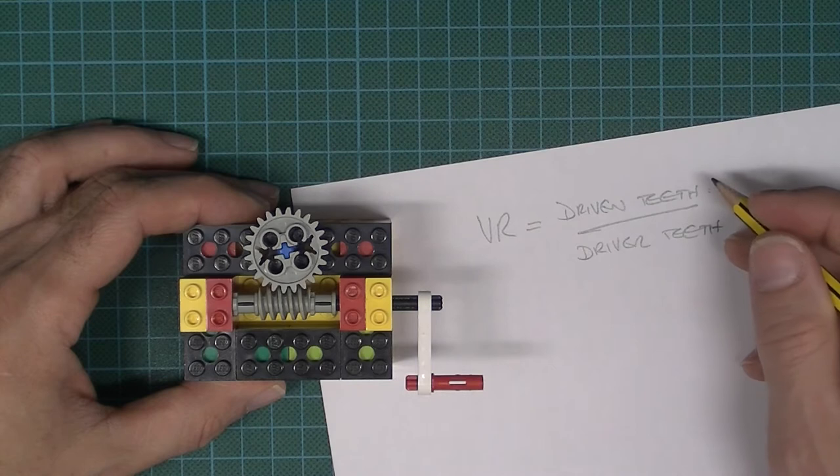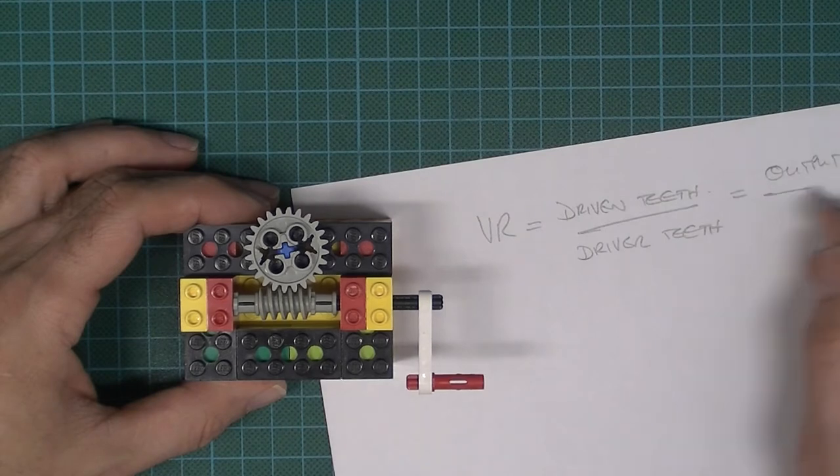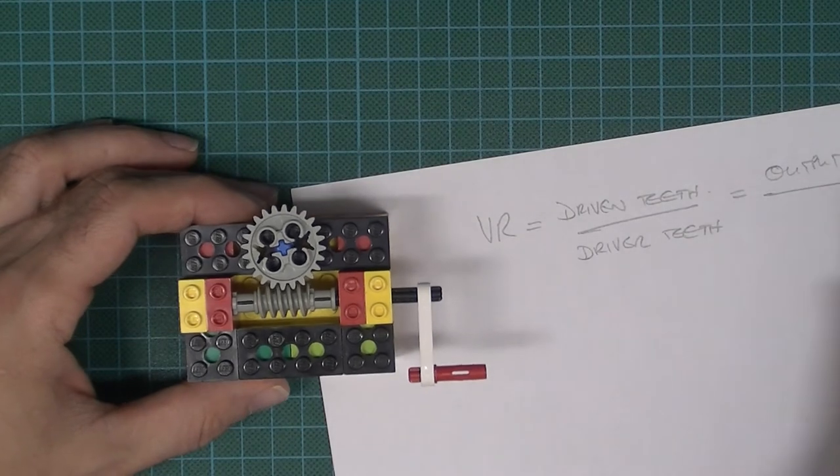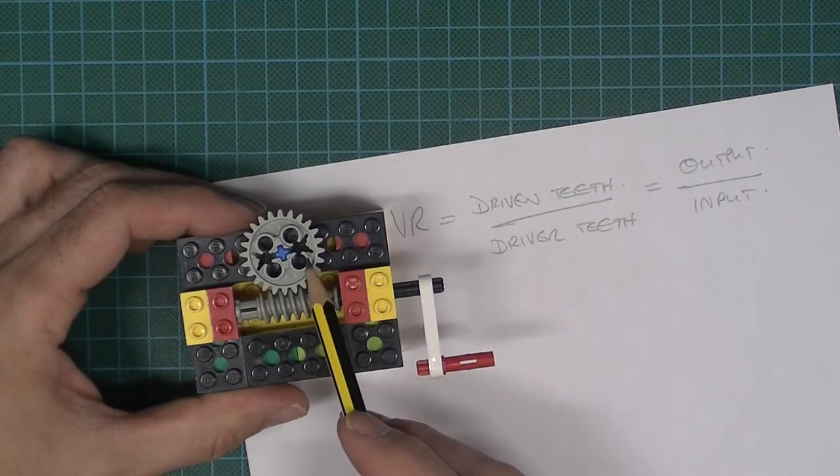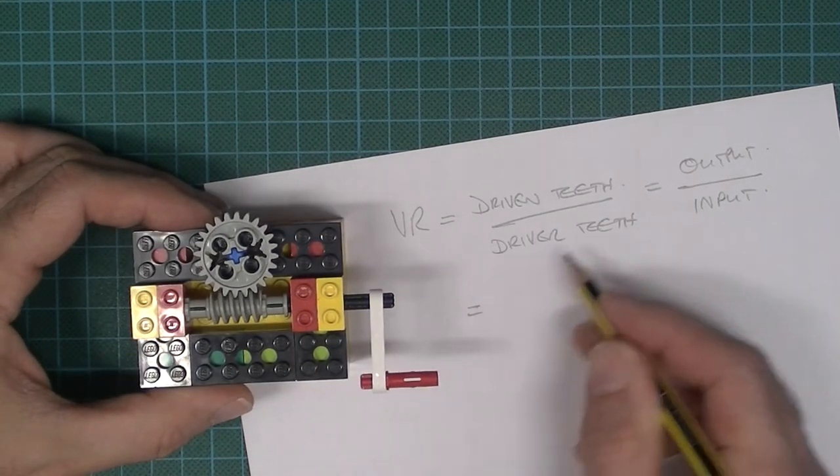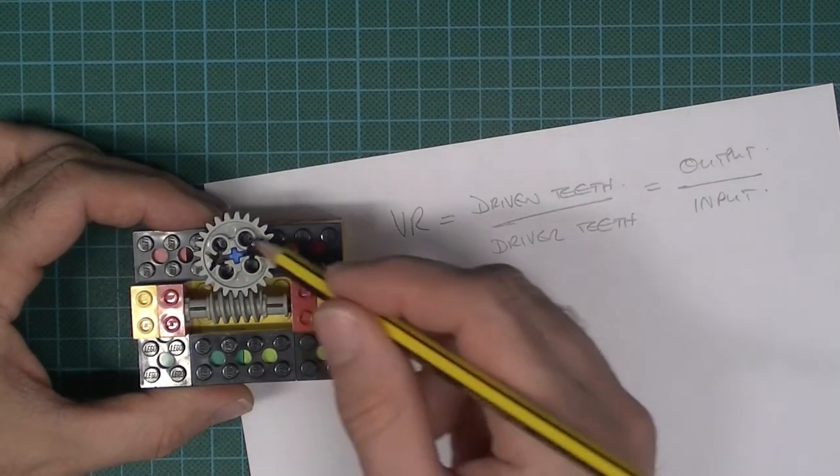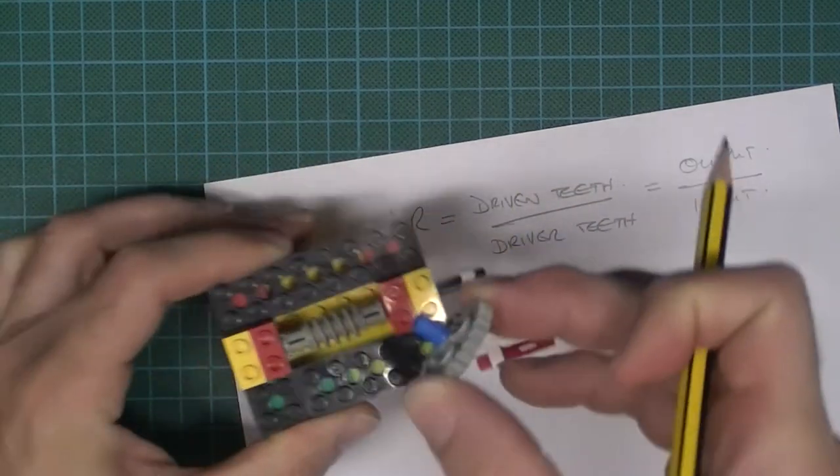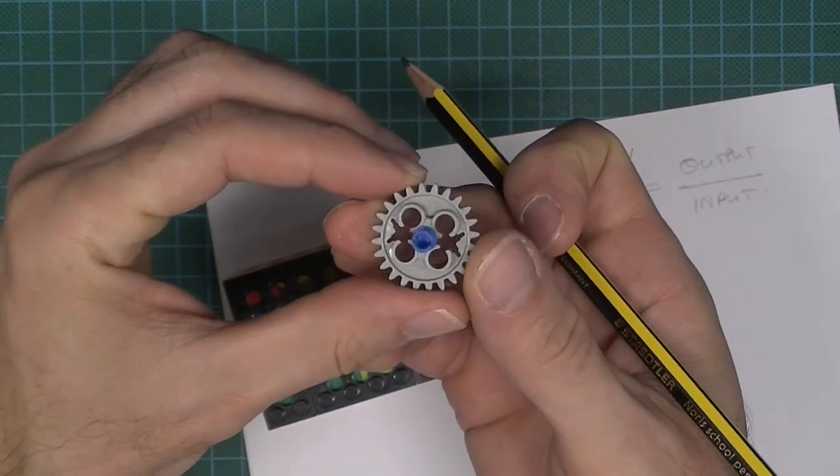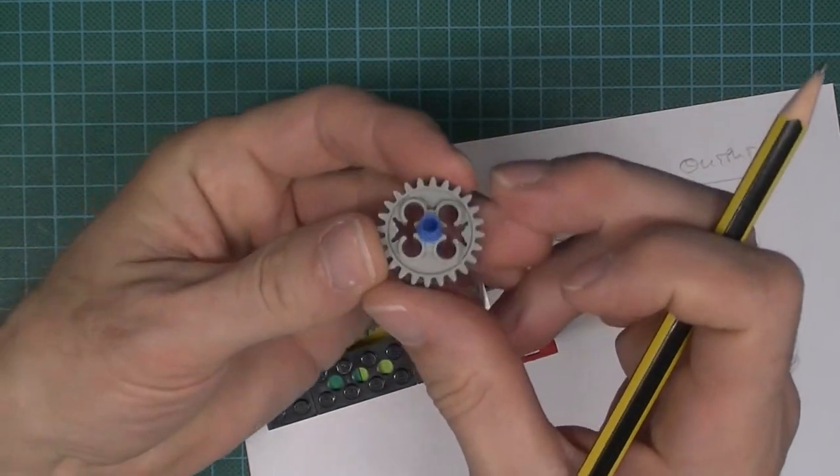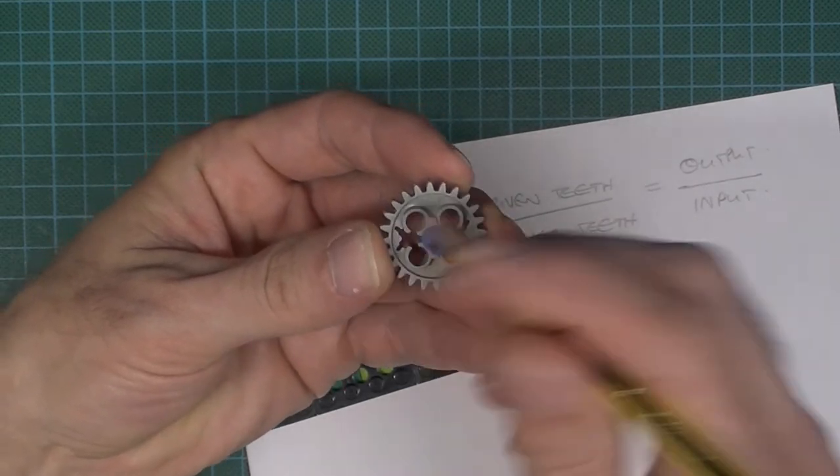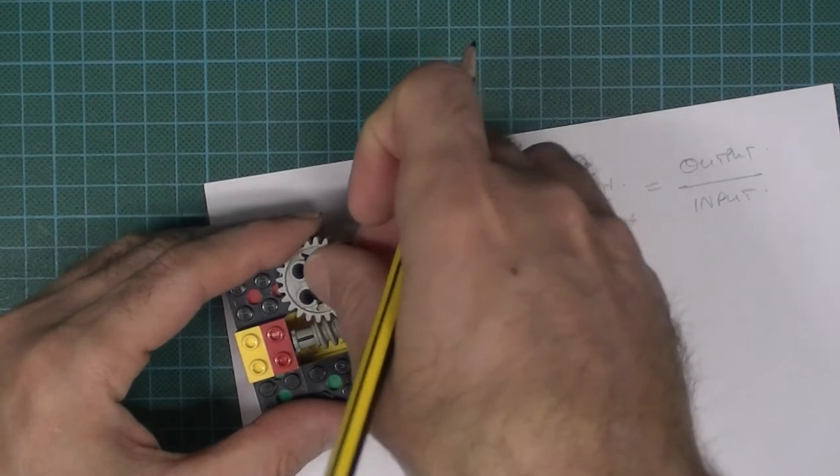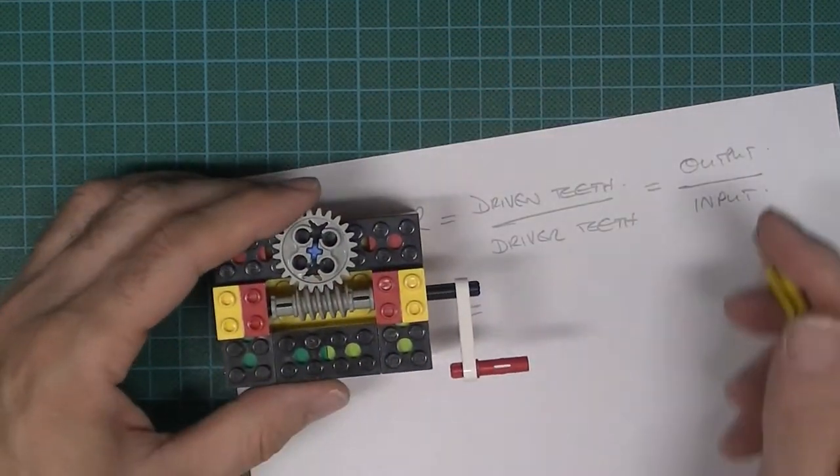When I say the driven teeth, I'm talking about the output. When I said the driver teeth, I'm talking about the input teeth. Remember, this is the input, that's the output. So how many teeth are on the output? Well, I believe that's 24. Let's just pop this out to be sure. I did post a video once before and counted the teeth incorrectly, but I think it's actually printed on there: 24 teeth. So if you count around there, that's 24.